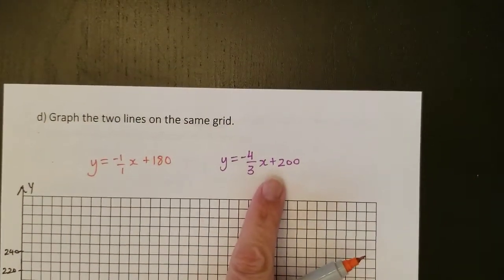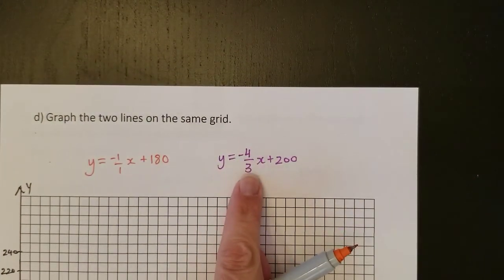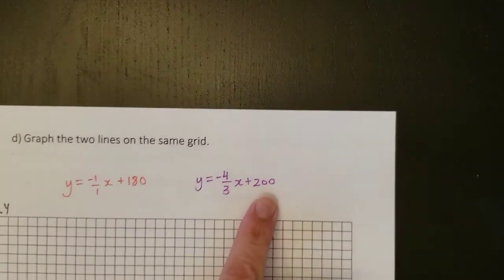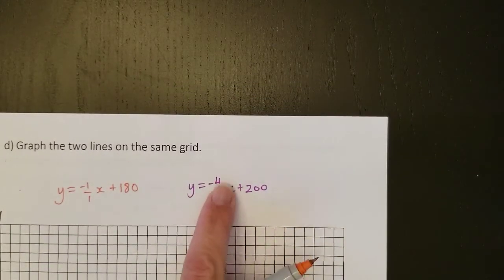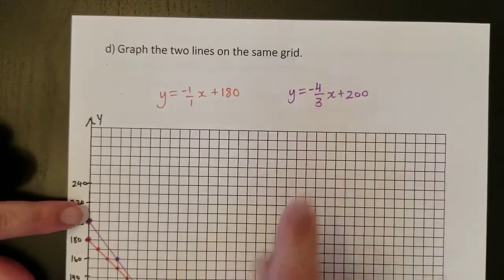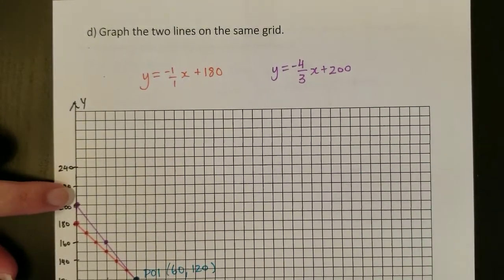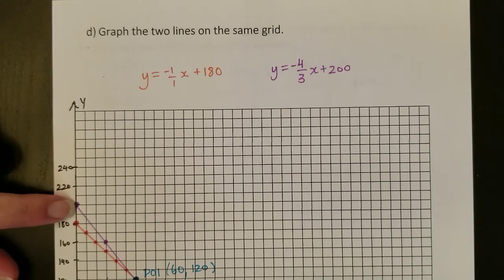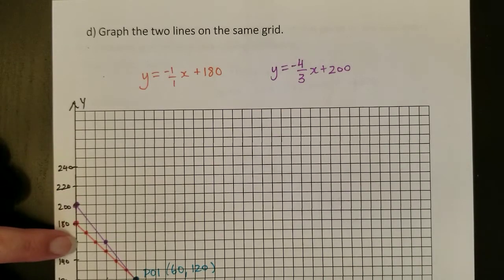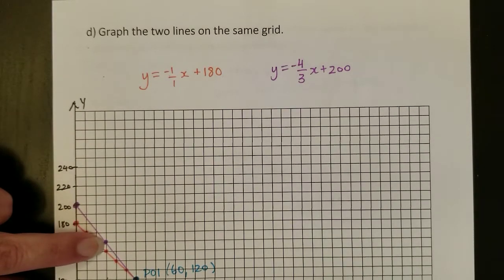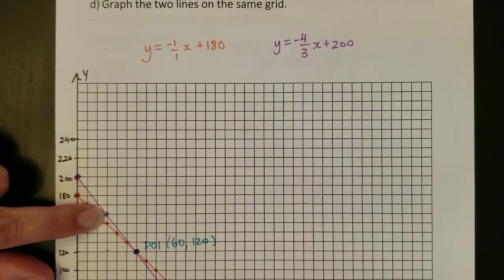The next equation, Y equals negative 4 over 3X plus 200. We're going to start up at the 200 and then go down 4 and over 3. So you can see I've drawn the purple line in here. We've got Y-intercept at 200 and then I counted 1, 2, 3, 4 squares down and 1, 2, 3 squares over and put that dot.